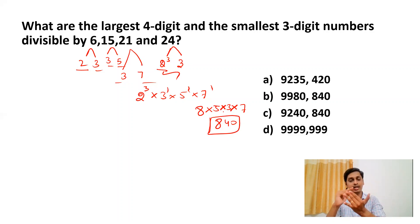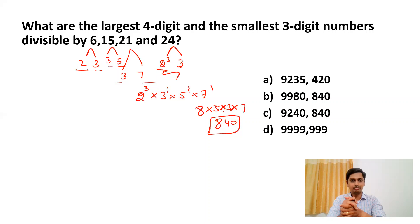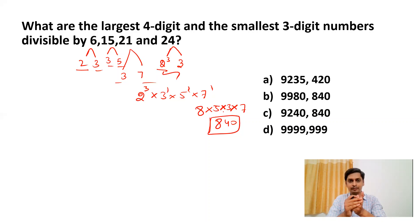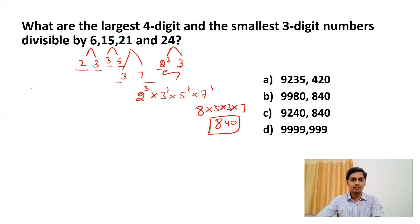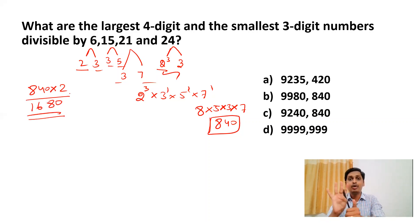So 840 is the LCM of 6, 15, 21, and 24 — meaning 840 is the smallest number divisible by all four. This 840 is also the smallest three-digit number divisible by all four. The next number divisible by all four is 840 × 2 = 1680, which is the smallest four-digit number divisible by 6, 15, 21, and 24.